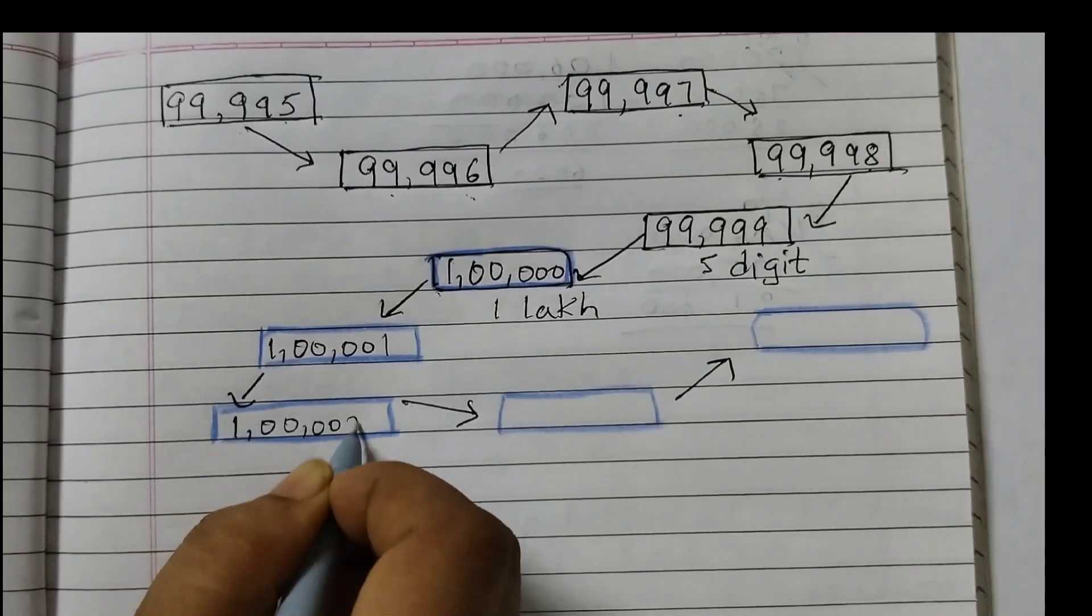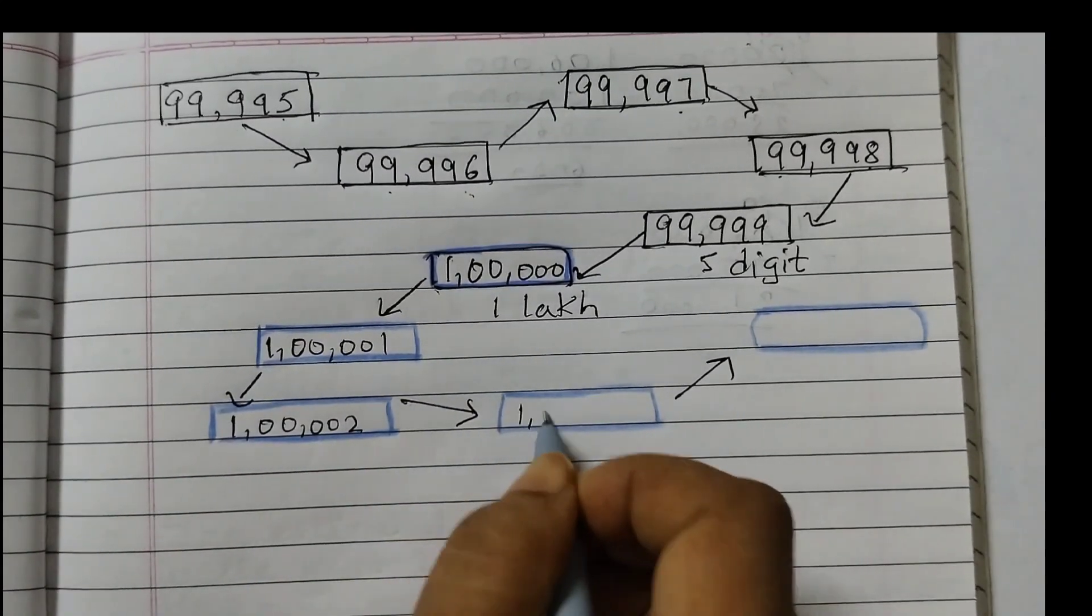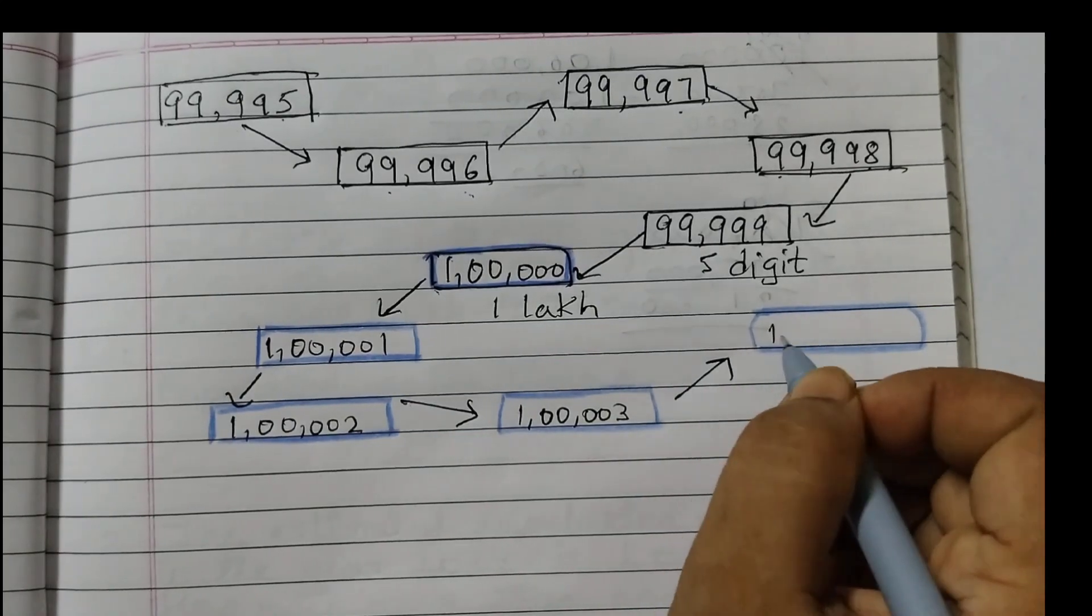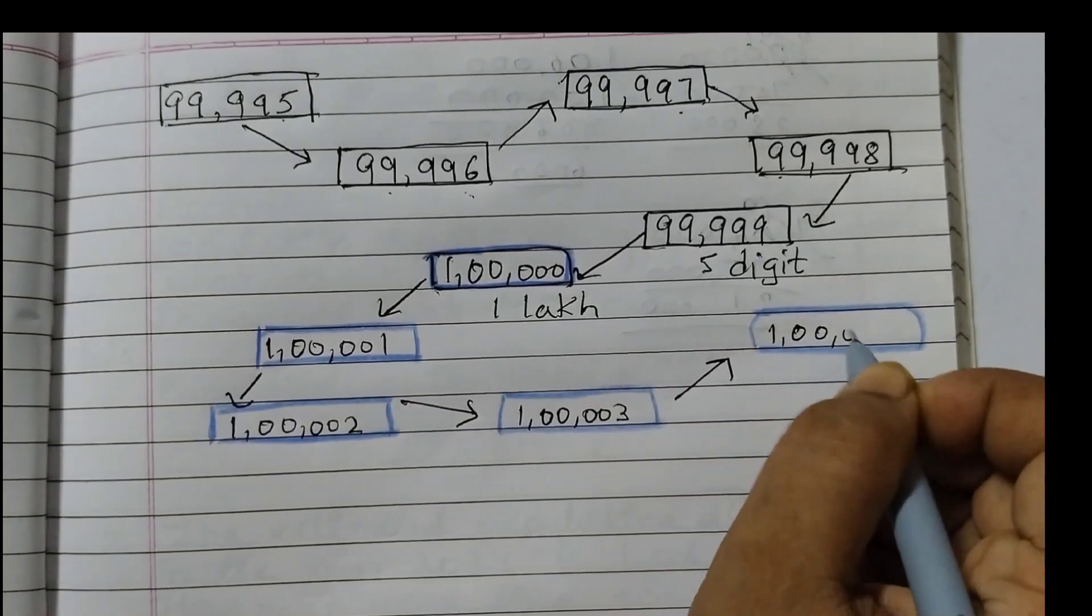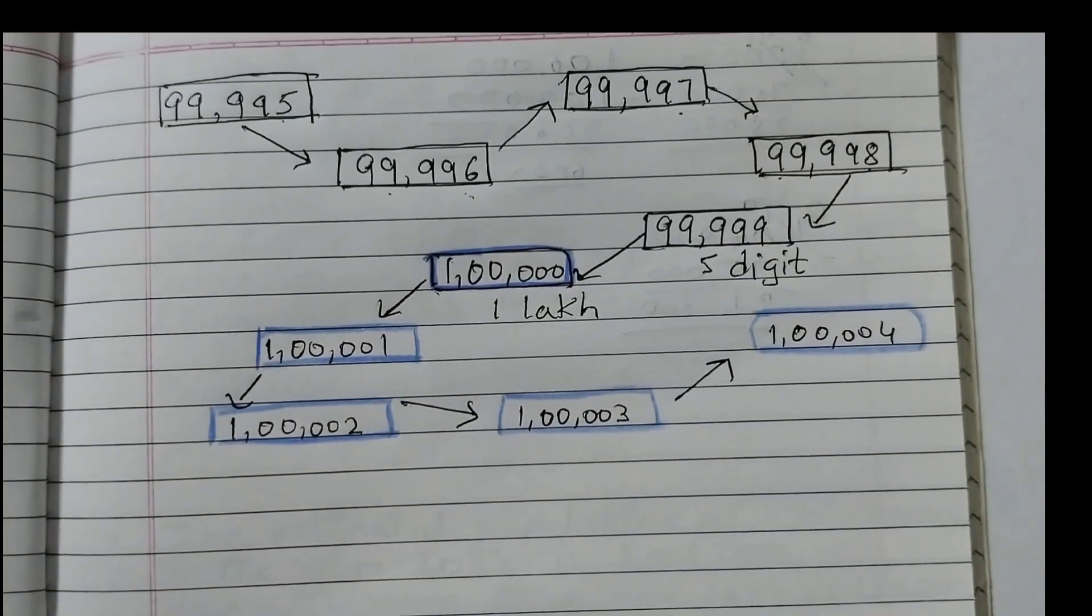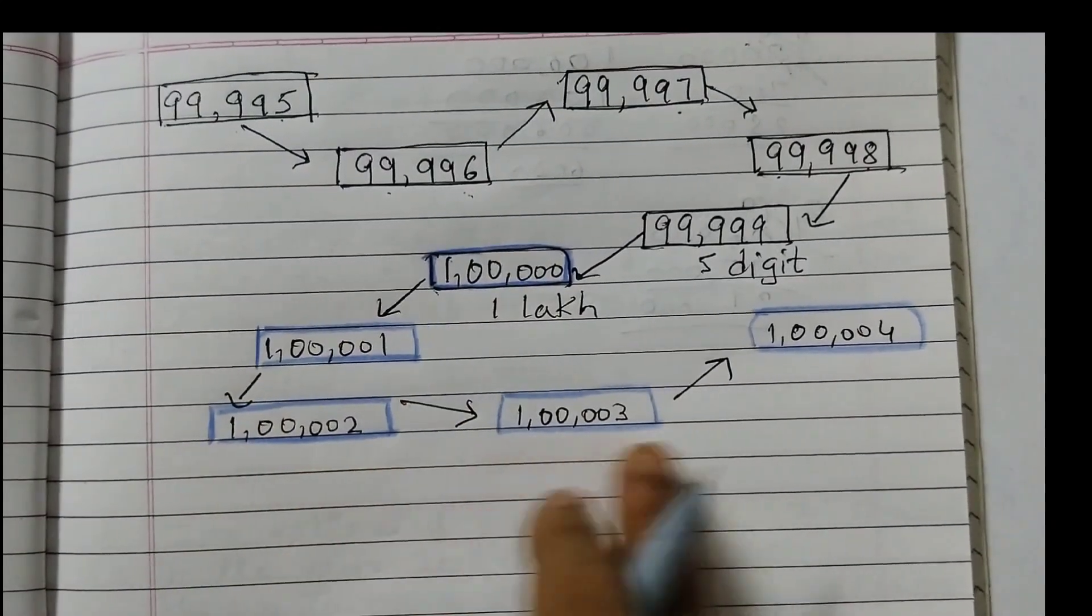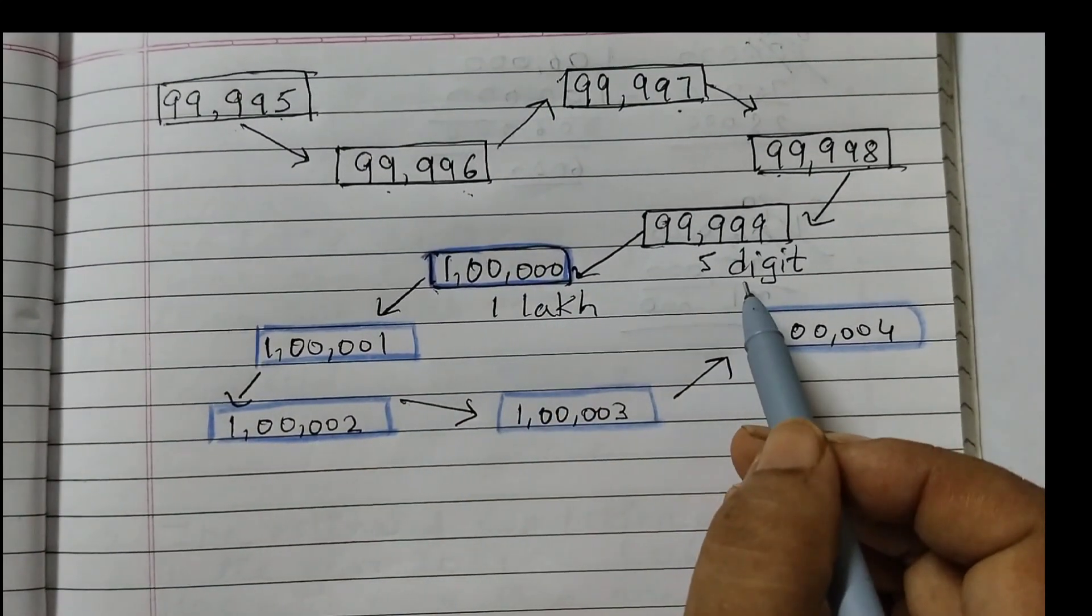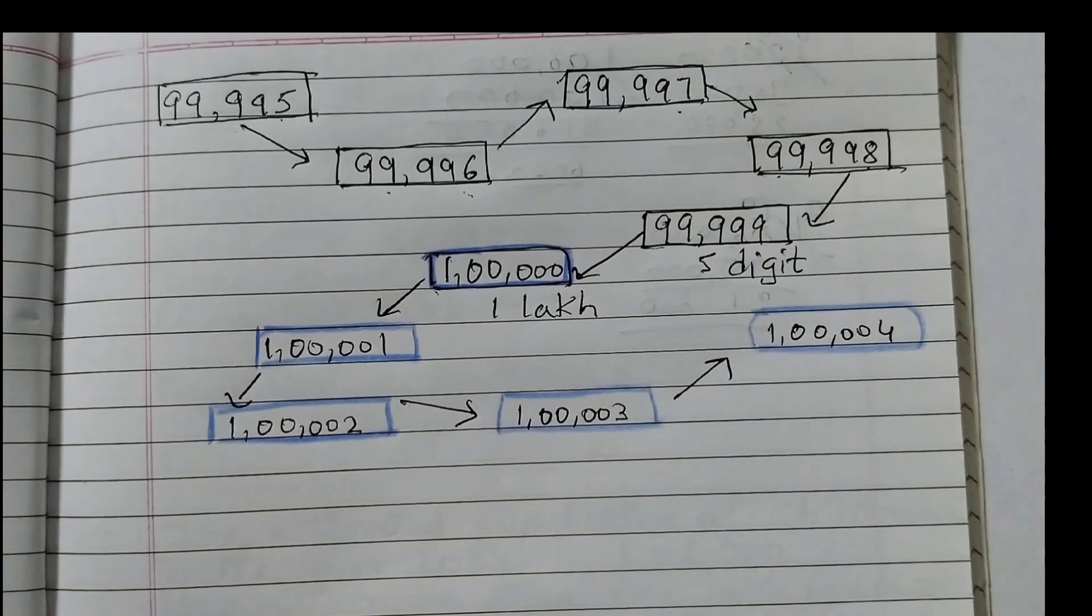So this would be 1 lakh 1. 1 lakh 2. 1 lakh 3. 1 lakh 4. So these are all 6 digit numbers. This is the smallest 6 digit number. And this is the largest 5 digit number.